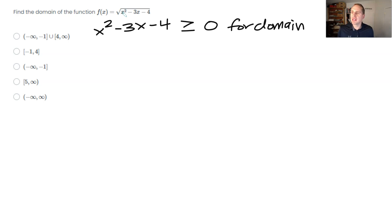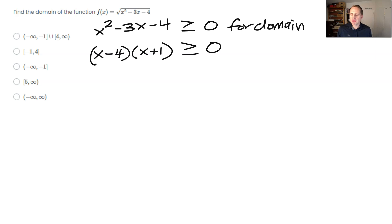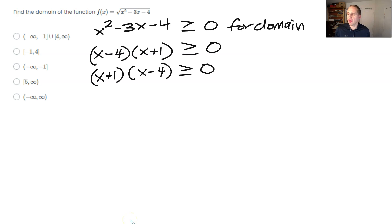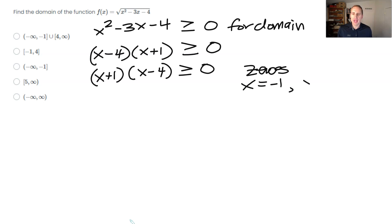We're going to consider this polynomial — it's a trinomial and it probably factors. We look for factors of negative four that also add up to negative three, which would be negative four and positive one. So we get (x + 1)(x − 4) greater than or equal to zero. The zeros are at x equals negative one and x equals four, where the function either changes from positive to negative or negative to positive.